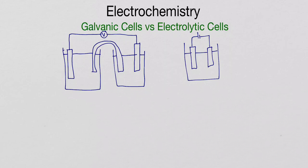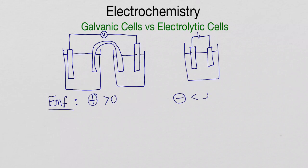The first important difference: if you are given or work out the EMF value — that's your voltage value — you will find that for a galvanic cell the EMF is a positive value, meaning the EMF is greater than zero. Whereas for an electrolytic cell the EMF would be a negative value, meaning it's less than zero. A lot of people get confused with that.